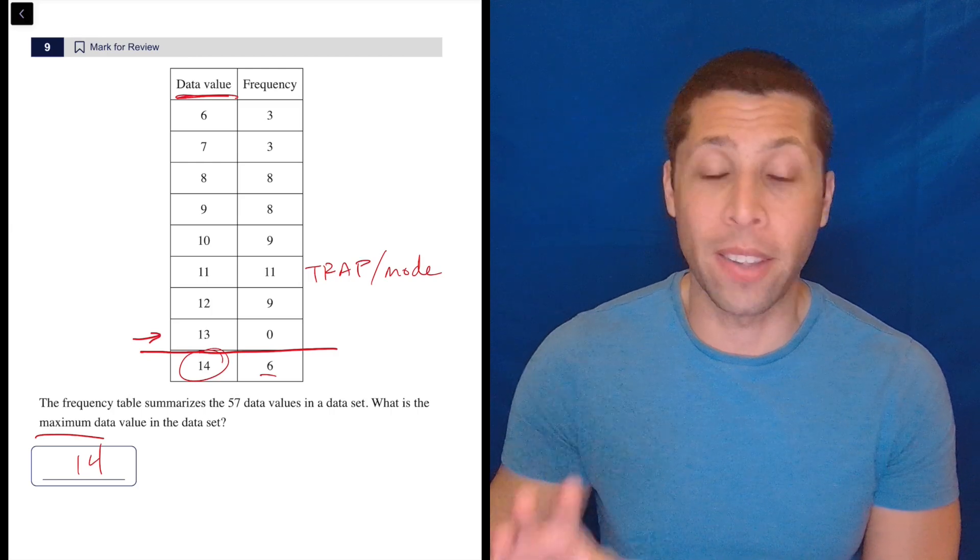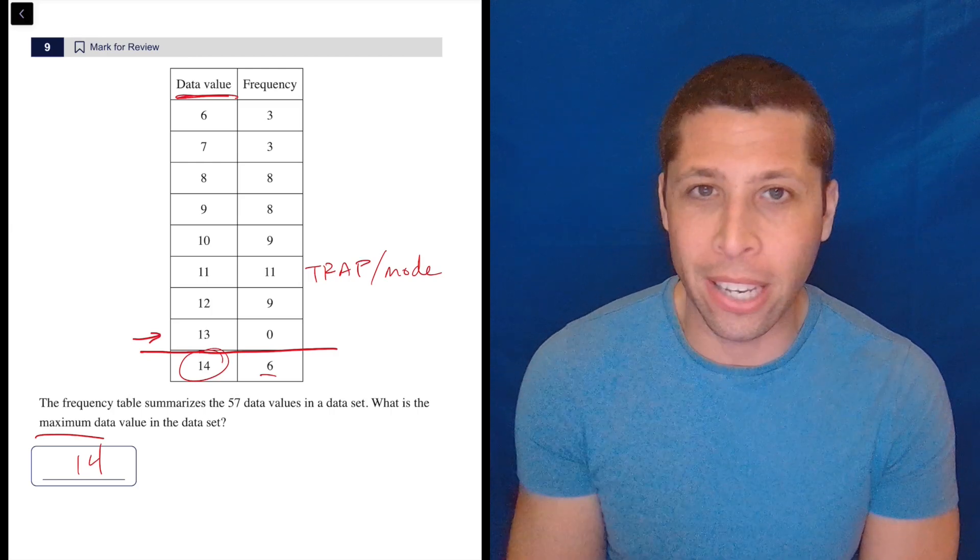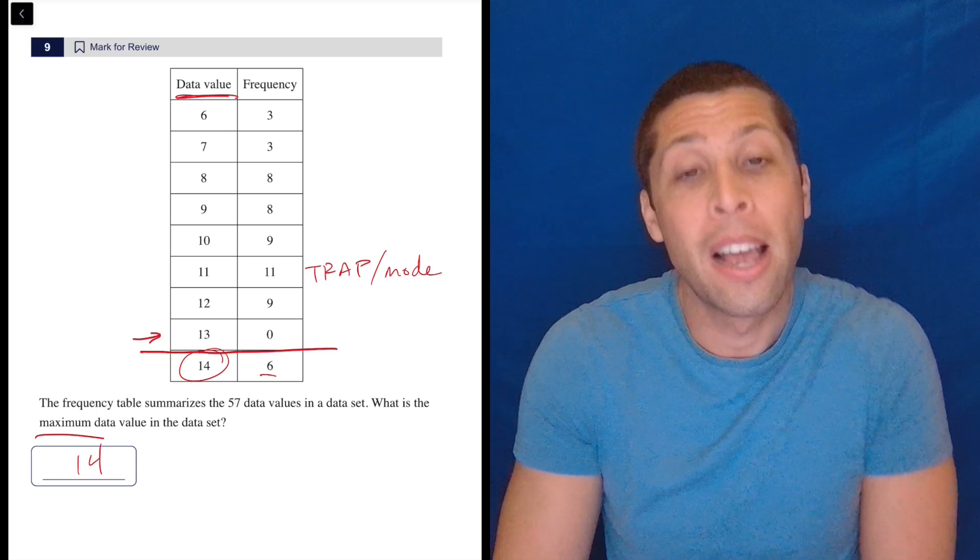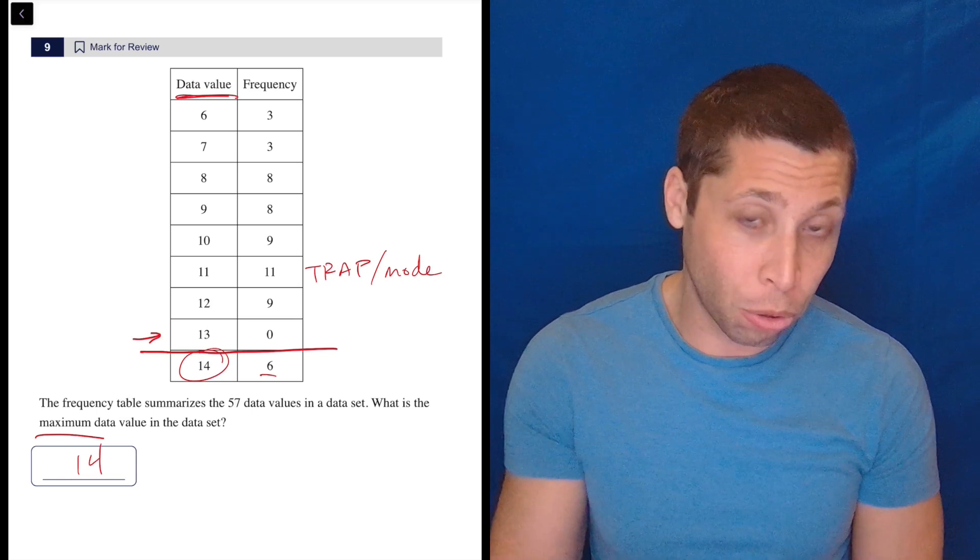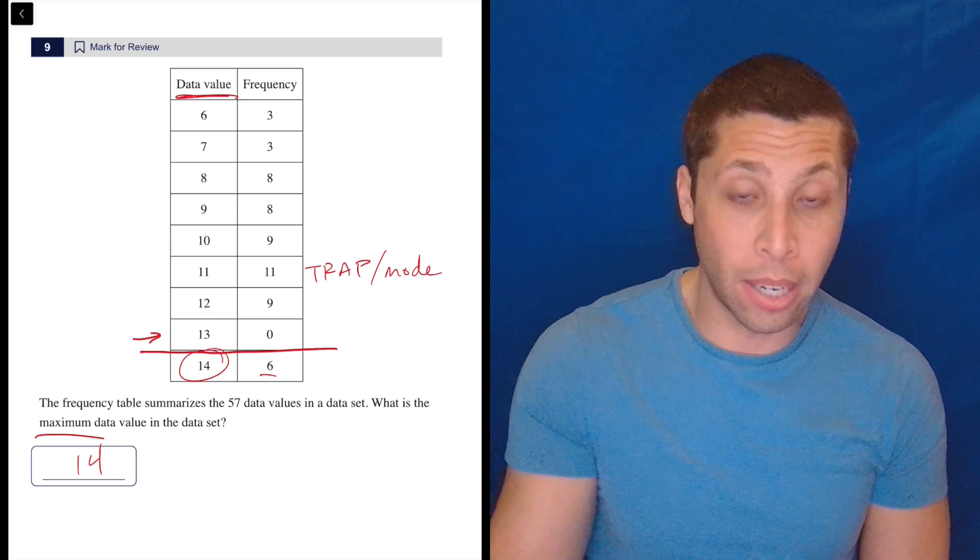It's a minor topic on the SAT, but most of the questions on statistics are basic definitions. And you'd think that maximum is something you would know outside of statistics, but apparently not. And now I've also told you the other one, right? The mode is the most common number in the data set.